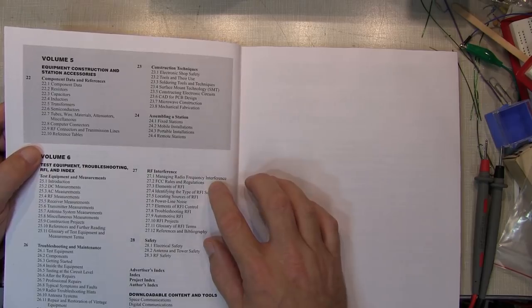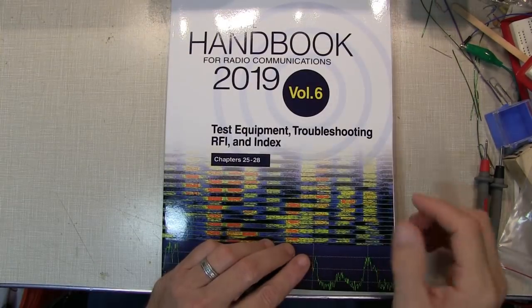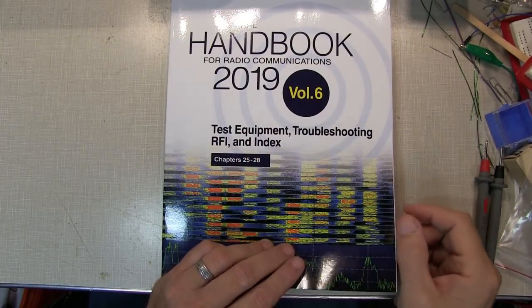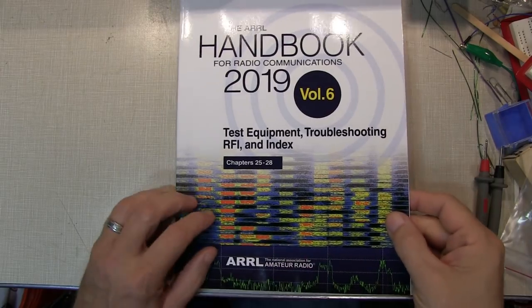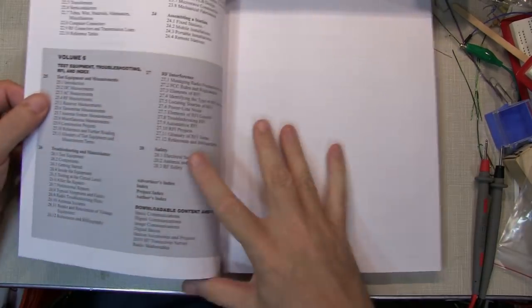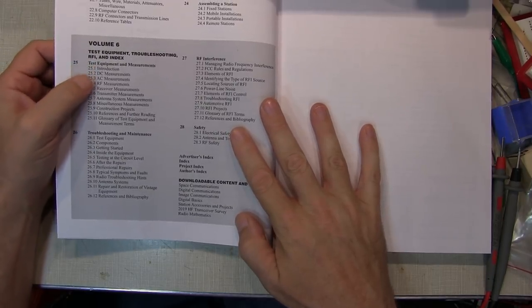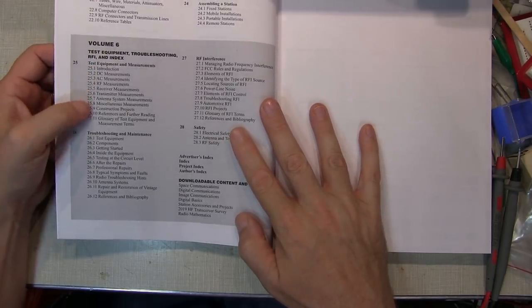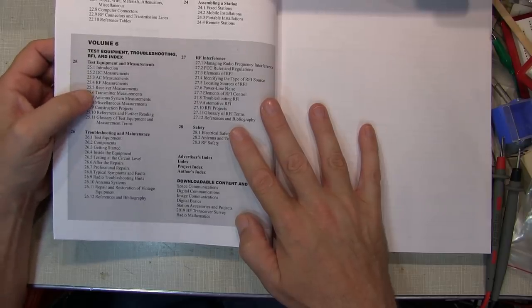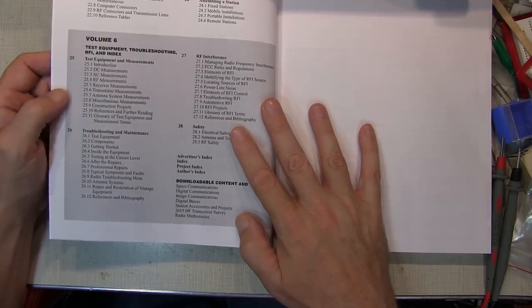And the final volume covers one of my favorite topics, Test and Measurement Equipment, Troubleshooting, RF, and the Complete Index. The table of contents here is Test and Measurement Equipment and Measurements, how to make AC, DC, RF measurements, and measurements on various radio-type devices, transmitters, and receivers.